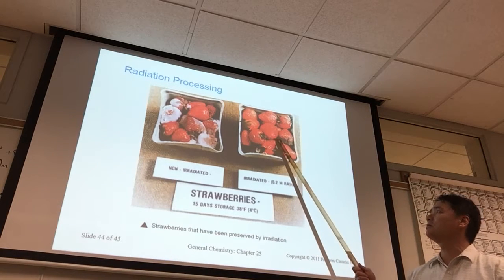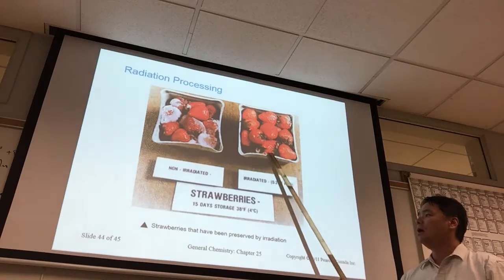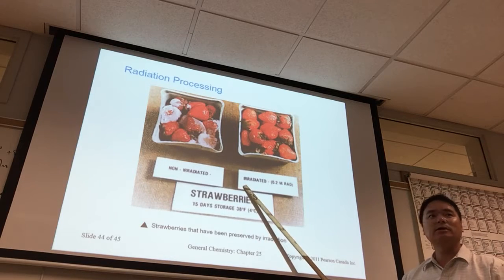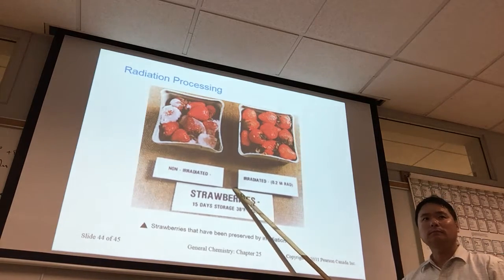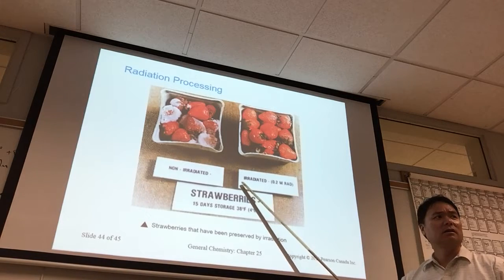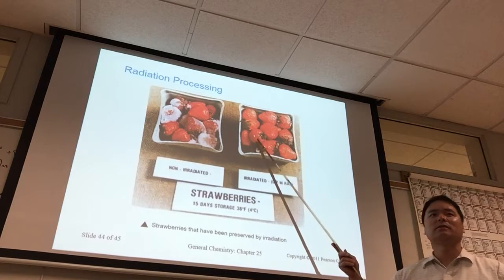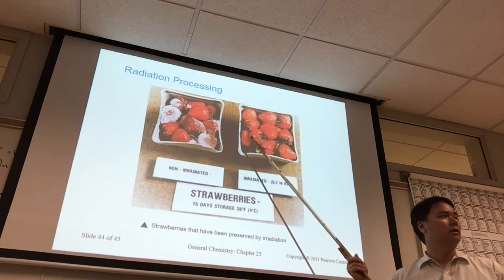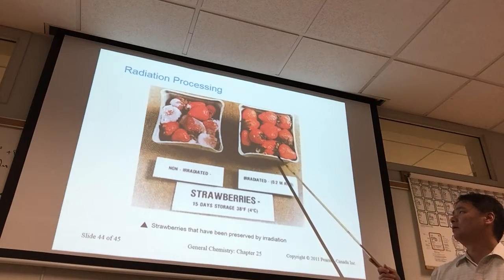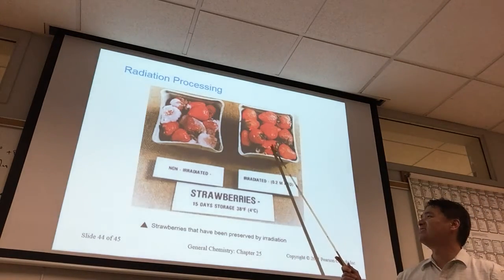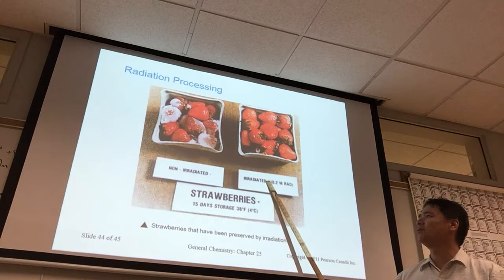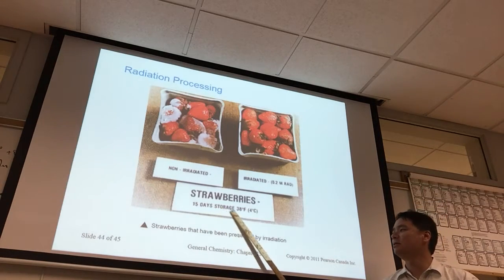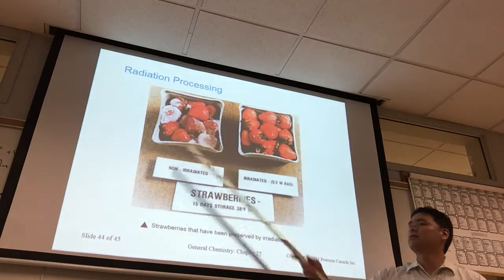Neutrons will cause food to become radioactive if you bombard it with them, because the neutrons get absorbed into the nucleus, screwing up the ratio and making those atoms radioactive. However, food irradiation doesn't use neutrons — it uses X-rays. X-rays will knock electrons off or do other things, but the strawberries are not going to be radioactive afterwards. So these have been irradiated but are not radioactive — it's for increasing shelf life by killing off fungus or whatever else.